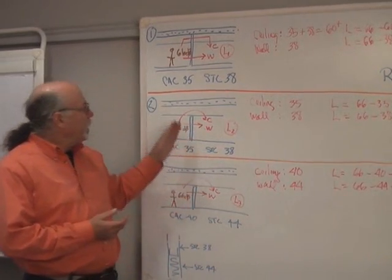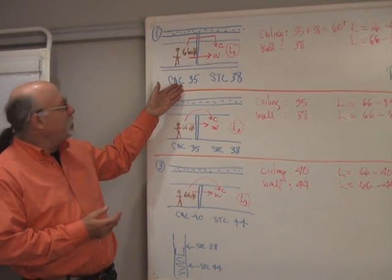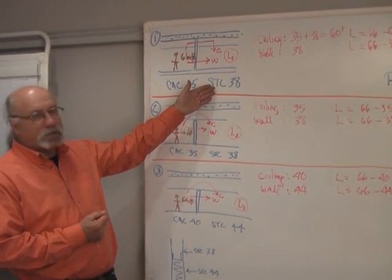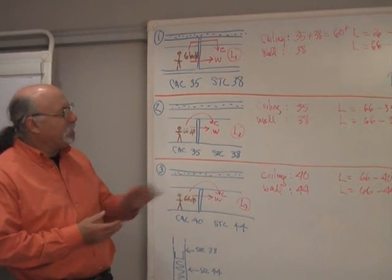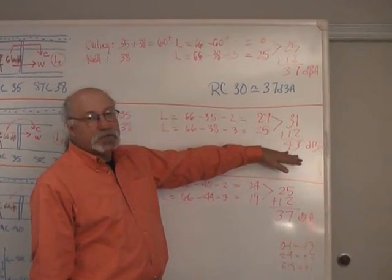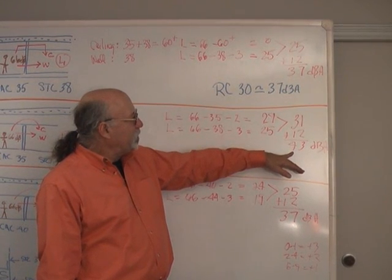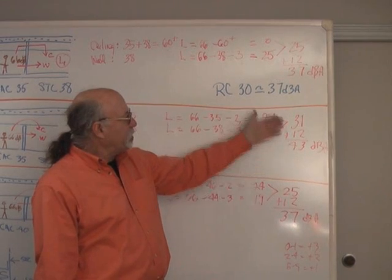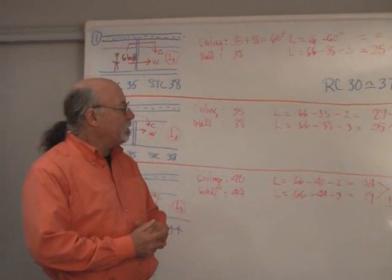On the other hand, in the case here where we've kept everything the same, the CAC or transmission loss of the ceiling and the STC or transmission loss of the wall are exactly the same in this case. The only difference is the wall only goes as high as the ceiling. What we find now is that we get 43 dB of sound being intrusive into the listening space compared to 37. And obviously this is about 6 dB higher than the background noise. There will be no confidential privacy in that case.